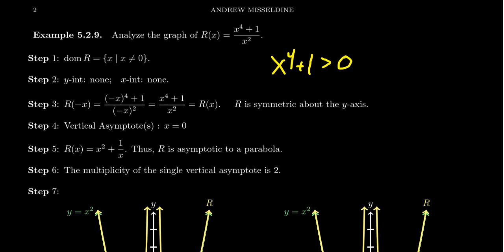In terms of the end behavior, this function, you'll notice that the top is x to the fourth, the bottom is x squared. So, as x goes to infinity, this will be approximately the same thing as x to the fourth over x squared, that is x squared. So, asymptotically, this will be a parabola.